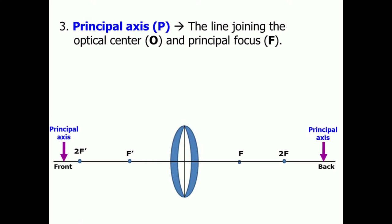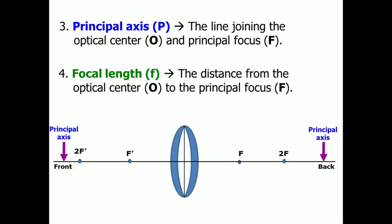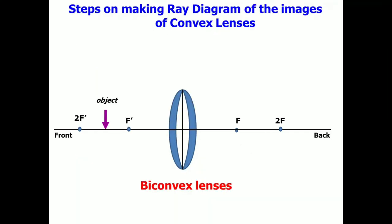The last term that you have to know is the focal length, or represented by a small letter f. This is the distance from the optical center to the principal focus. So, we have it here.